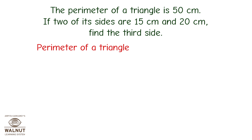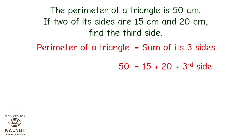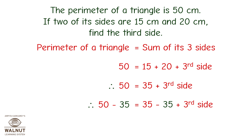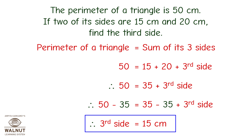Let's write the formula first. Perimeter of a triangle is equal to sum of its 3 sides. We know the perimeter and length of 2 sides, so let's put these values in the formula. So it will become 50 is equal to 15 plus 20 plus third side, that is 50 is equal to 35 plus third side. Here we can use subtraction property. We subtract 35 from both the sides and we get third side is equal to 15 centimeters.